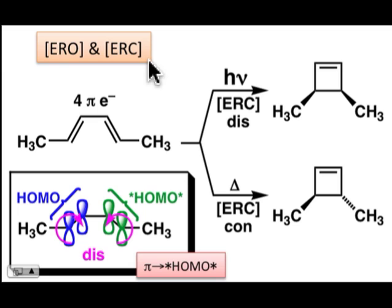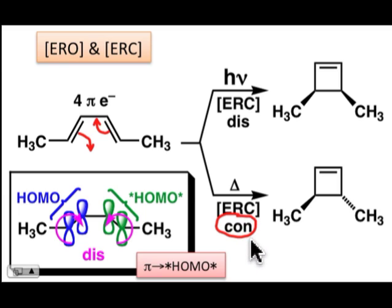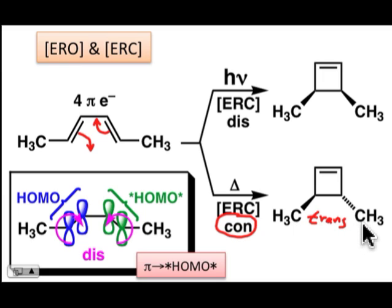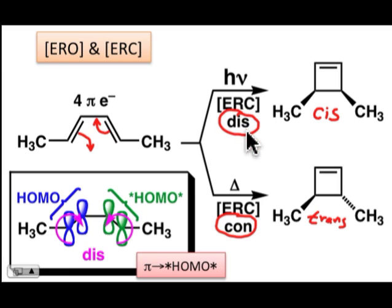Now let's look at the electrocyclic ring closure reaction for a 1,3-diene. Four pi electrons are involved in the electrocyclic ring closure process. Previously we learned that under thermal conditions, the pathway for a 4 pi electrocyclic ring closure is the con-rotatory pathway, which for this reactant with methyl groups gives the trans isomer — one methyl group above and one below the plane of the newly formed four-membered ring. Under photochemical conditions, this same reactant gives the cis isomer, and the only way this can come about is by a dis-rotatory process. How can we rationalize that under photochemical conditions the dis-rotatory pathway is followed?